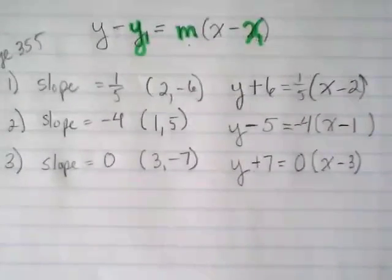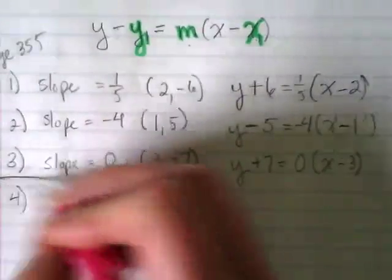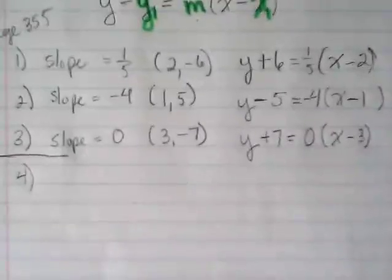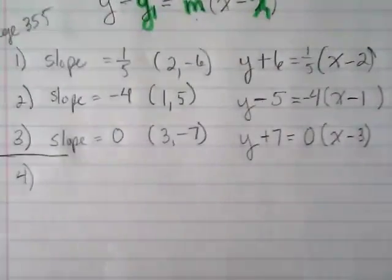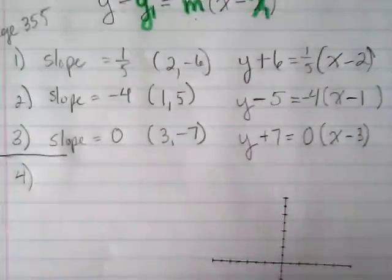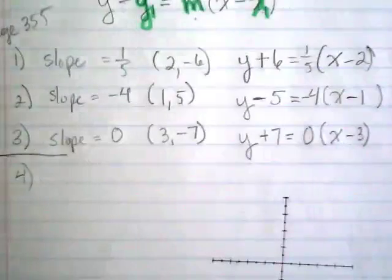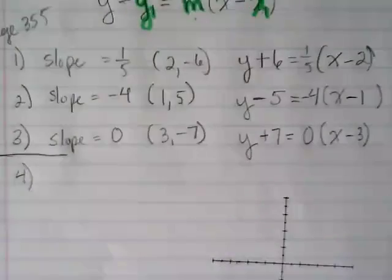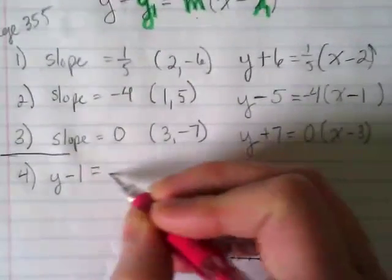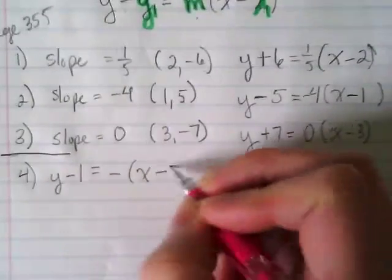Now our next step is we're going to be taking equations like this and working with them, not just plugging numbers in. So number four has different directions. In the book it says graph the line described by each equation. I'm going to do a couple of examples up here. Number four says y minus one equals negative parentheses X minus three.